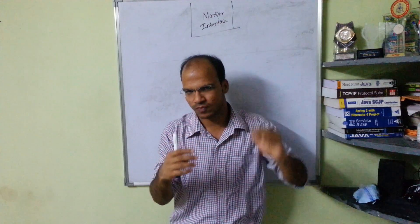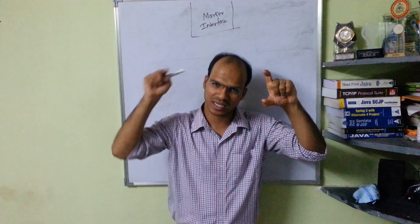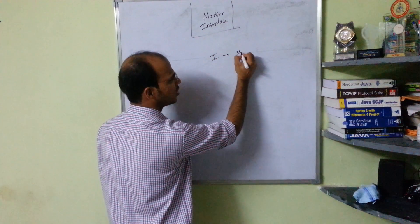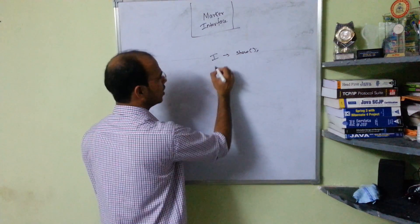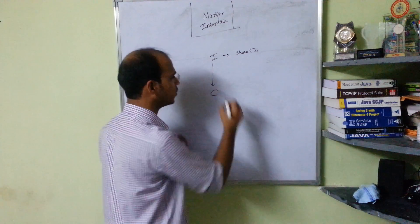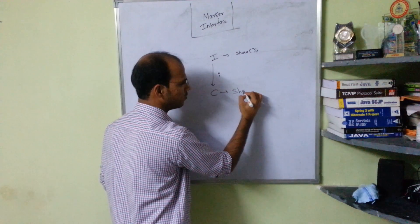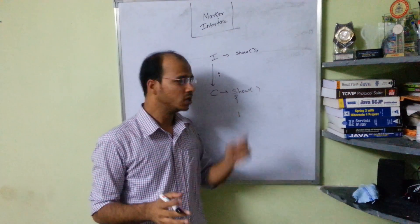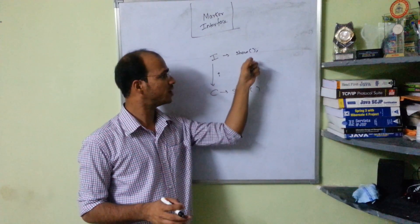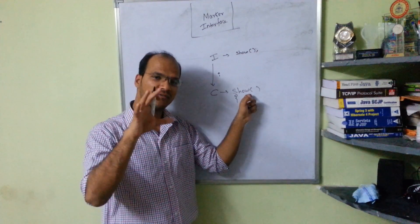So in a class we have definitions of methods, and in an interface we have declarations of methods. When you declare those methods in an interface, you have to define them in a class. You have to implement the interface in the class and define the method there. So you have an interface, you have a class, you implement the interface in the class, and the method — which is declared, also called an abstract declaration — gets defined in the class.